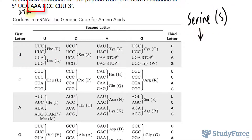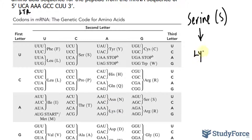The next amino acid has the nucleotide sequence AAA. That one's easy — we find A, then another A, and looking within that section it happens to be lysine, which has the abbreviation K.